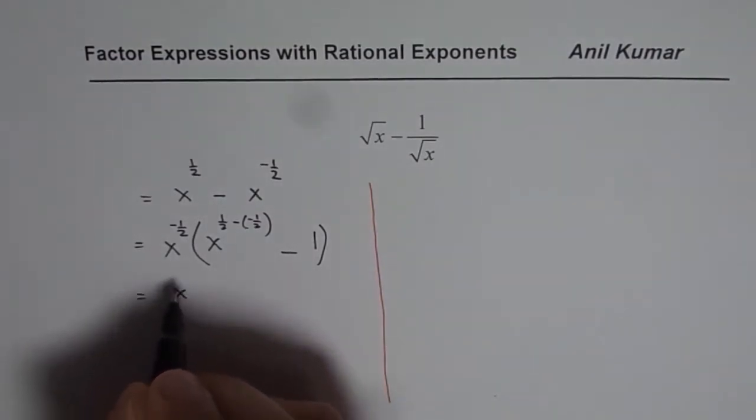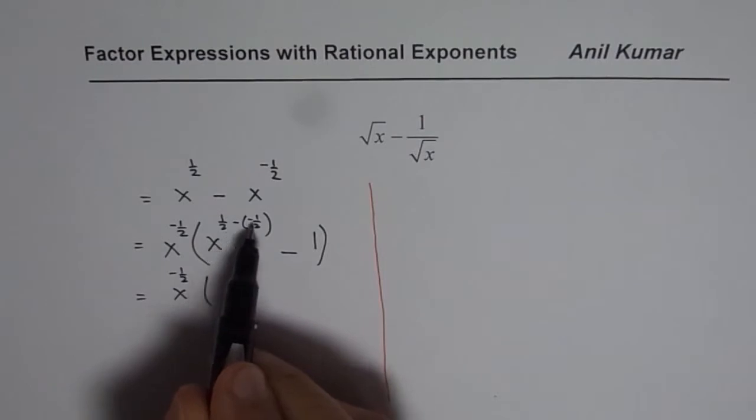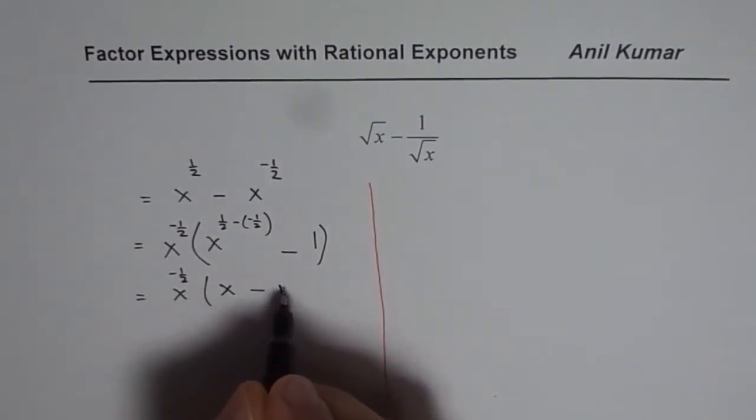Now we get x to the power of minus half and here what do you have? Minus minus becomes plus, so half plus 1 is 1 so we get x minus 1.